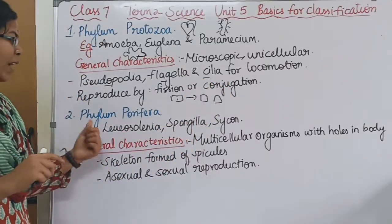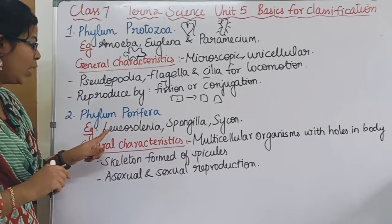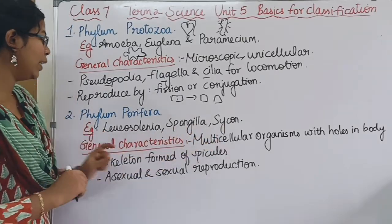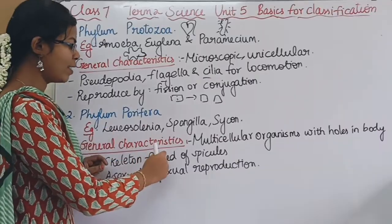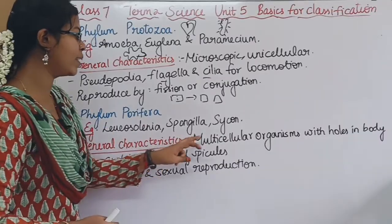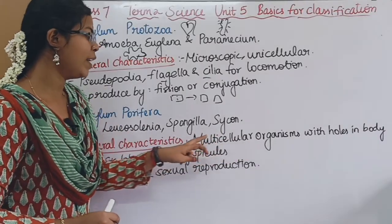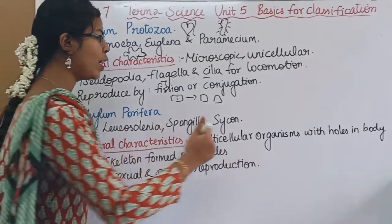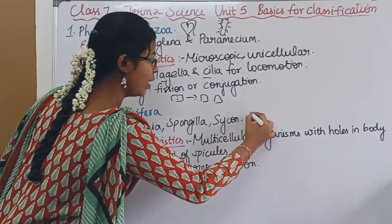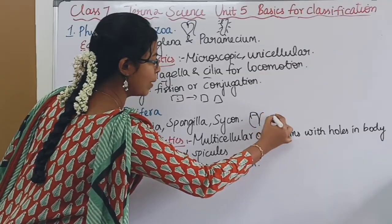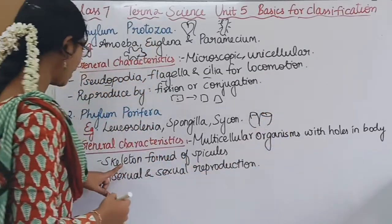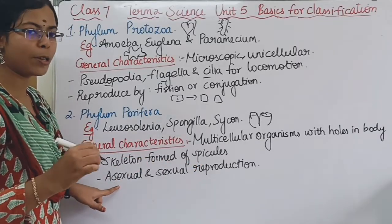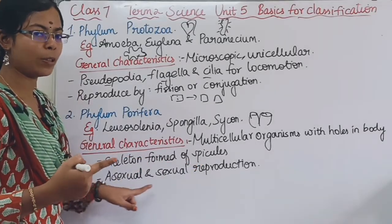The second division is Phylum Porifera. For example, Leucos, Scypha, Spongilla, and Sycon. The general characteristics: it is a multicellular organism made of many cells. In the body, there are pores. There is a skeleton formed of spicules. Reproduction is by both sexual and asexual methods.